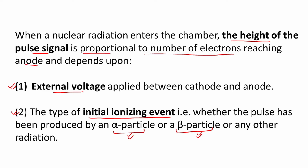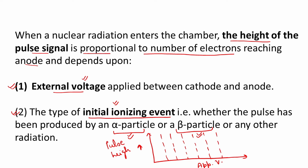The height of the pulse in a gas detector depends on two factors: the external applied voltage, and the initial ionization event. We will discuss how increasing the applied voltage affects pulse height, and also the effect of initial ionization — comparing an alpha particle with high ionizing power versus a beta particle with low ionizing power.